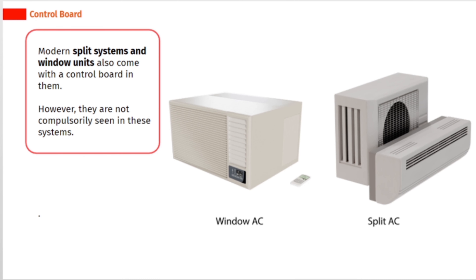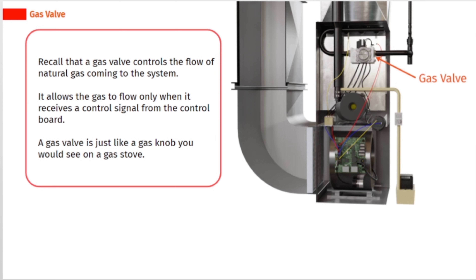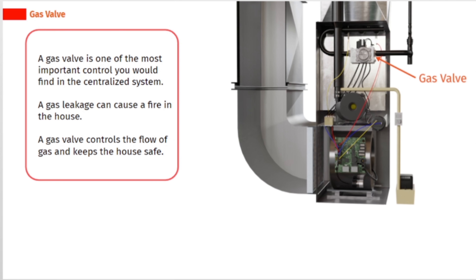Modern split systems and window units also come with a control board, however they are not compulsorily seen in these systems. A gas valve controls the flow of natural gas coming to the system. It allows the gas to flow only when it receives a control signal from the control board. A gas valve is just like a gas knob you would see on a gas stove, and it is one of the most important controls in a centralized system. A gas leakage can cause a fire in the house, so the gas valve controls the flow of gas and keeps the house safe.